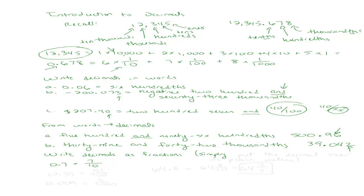Simply put the decimal over its place value. So for 0.51, that would be fifty-one over a hundred. Now, say I wanted to write nine thousandths as a decimal: that's zero point zero zero nine. And as a fraction, that's nine over one thousand.